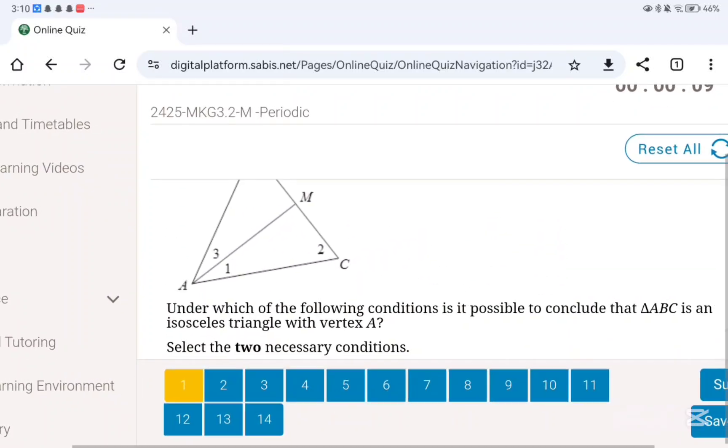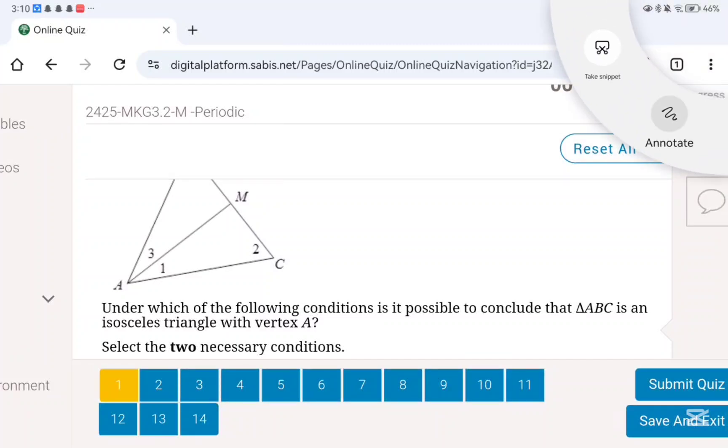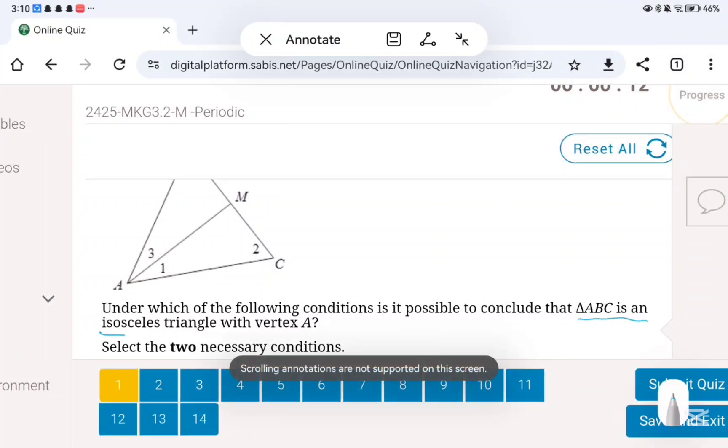So in this question, they tell us that this triangle has a vertex of A. What can we do to prove that it is isosceles? We know that in an isosceles triangle, the angles like angle 1 and angle 3 should be congruent, and AM should be perpendicular to BC.